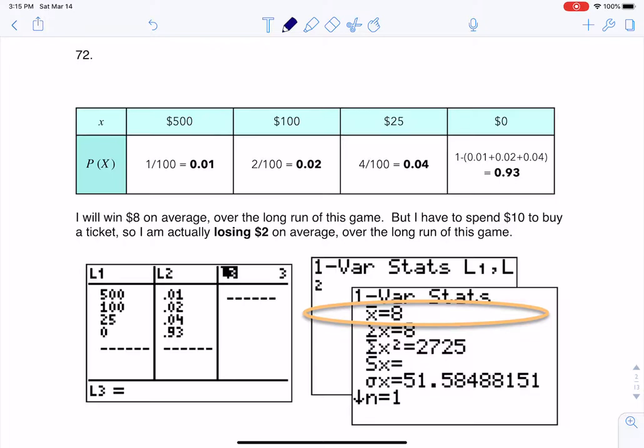There are only 100 tickets and they told you that one prize, there's one prize of $500, two prizes of $100, and four of $25. And we hear that phrase, find the expected gain or loss.